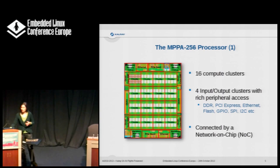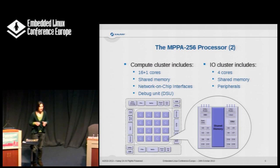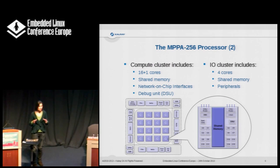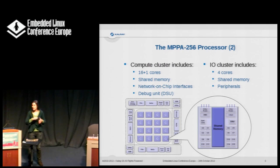Going even deeper: one compute cluster — one of those in the middle — has 16 processors for the user and one system core. The 16 processors share memory. You also have the interface for the network on chip and some debug capabilities. On the IO cluster, you have a quad core of four cores that also have some on-chip memory, and they have access to all the peripherals of the chip.